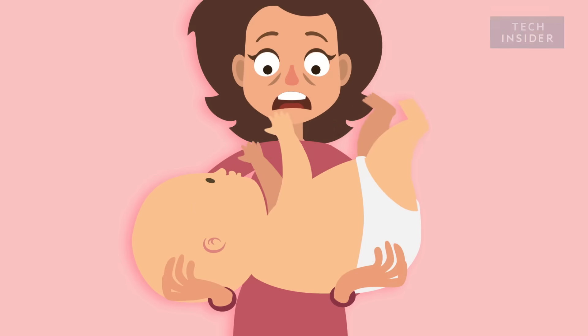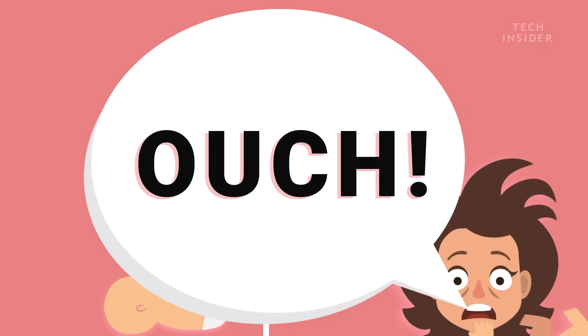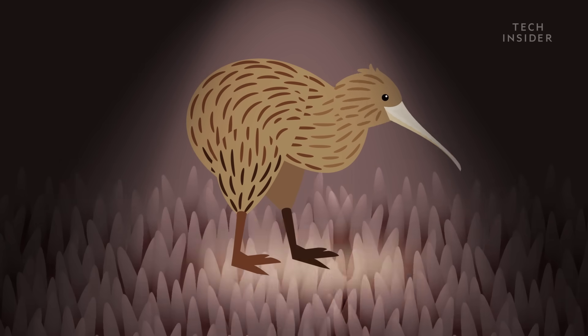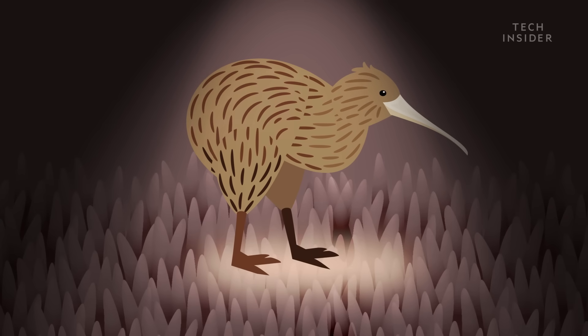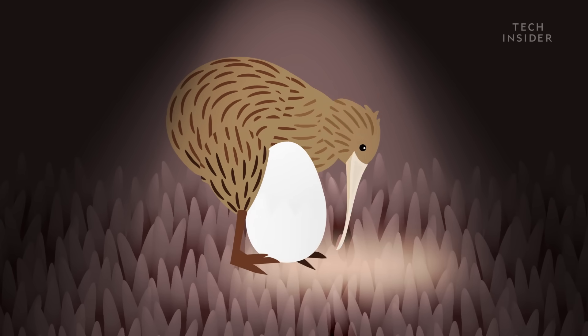Imagine giving birth to a 24-pound baby. That's three times the size of an average human newborn. Ouch! But for kiwi birds, giant chicks are the norm. Females lay a single egg up to 20% of their body weight.